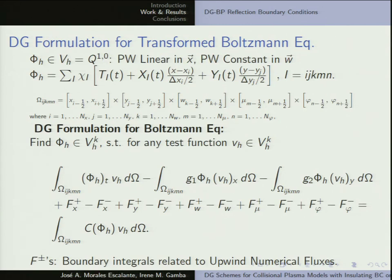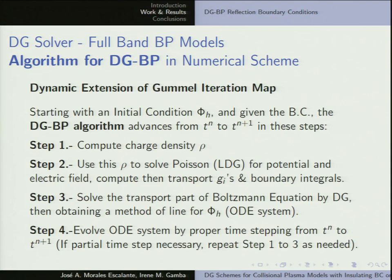The DG formulation — as many people here probably know — is: you multiply your Boltzmann equation by a test function and integrate by parts. You get several boundary integrals from IBP. The method can be expressed as an algorithm: you compute the charge density, from which you get the electric field via Poisson, solved by local discontinuous Galerkin. Once you have the electric field, you solve the transport part of the Boltzmann equation by discontinuous Galerkin to get your set of ODEs for time evolution, solved by Runge-Kutta. This is an iteration of these four steps.